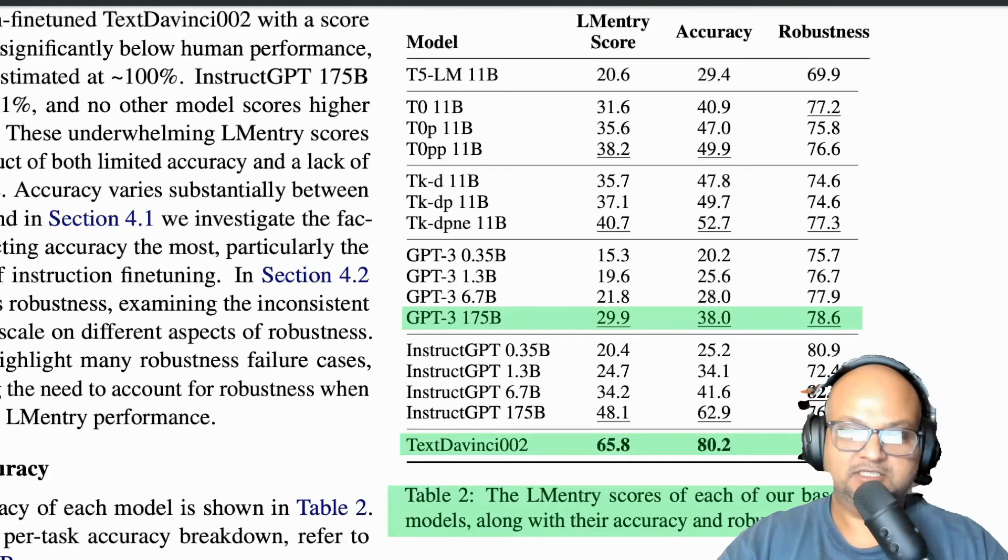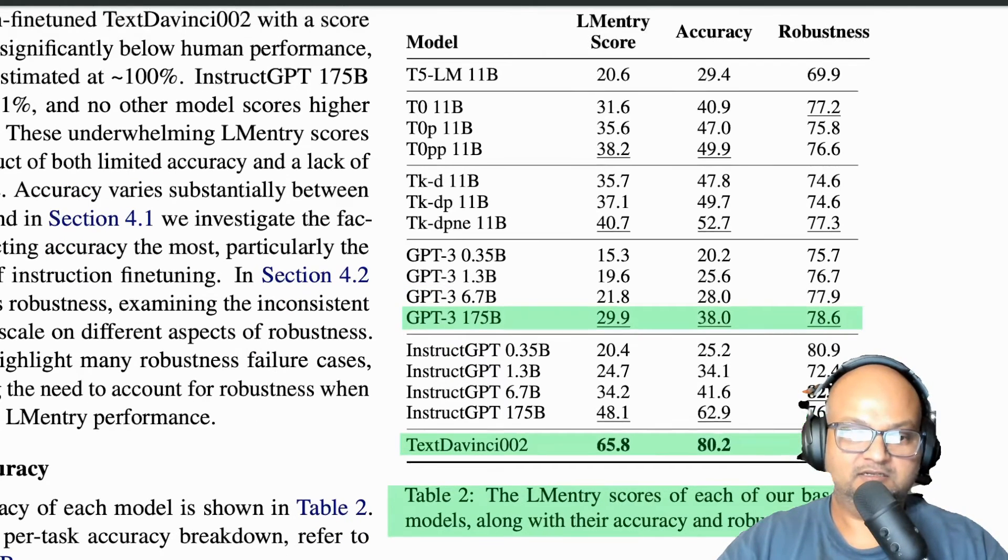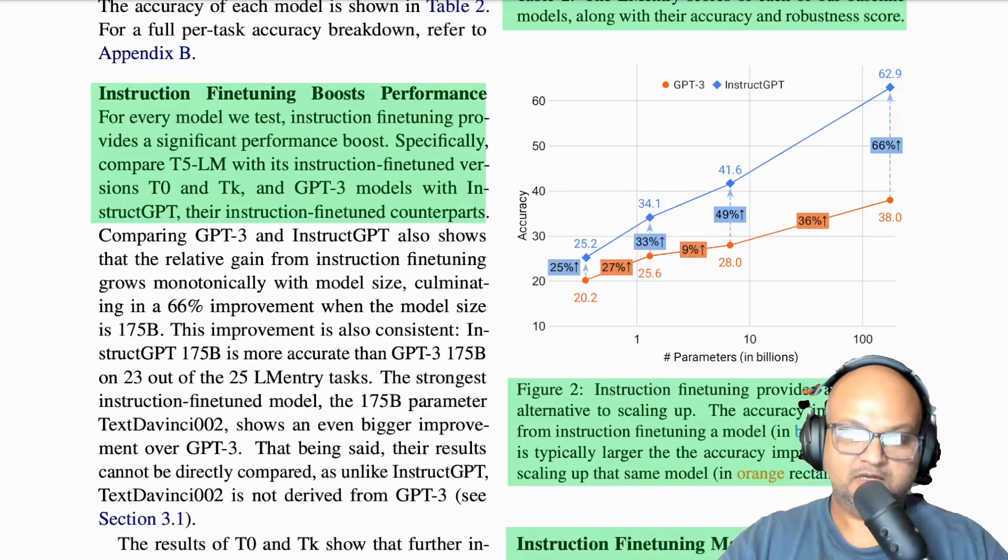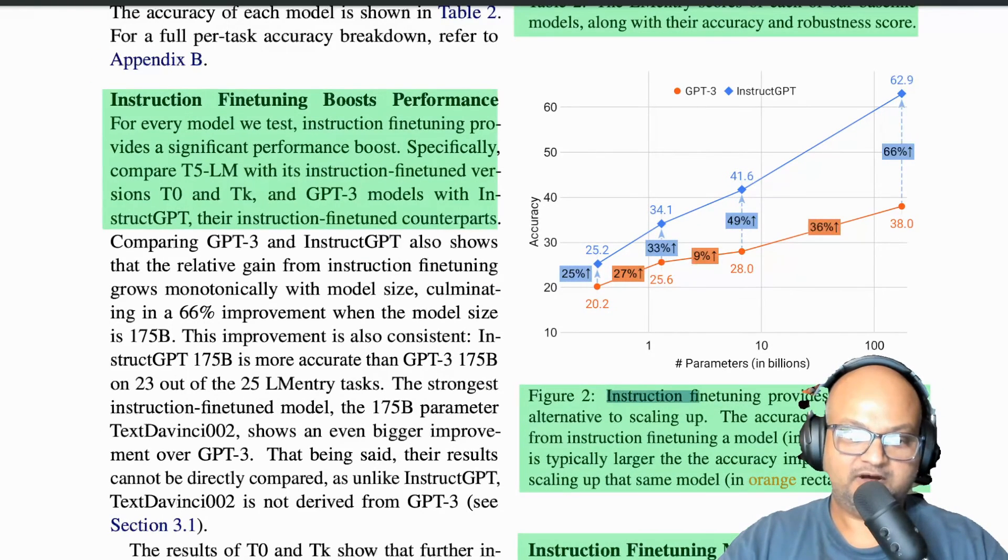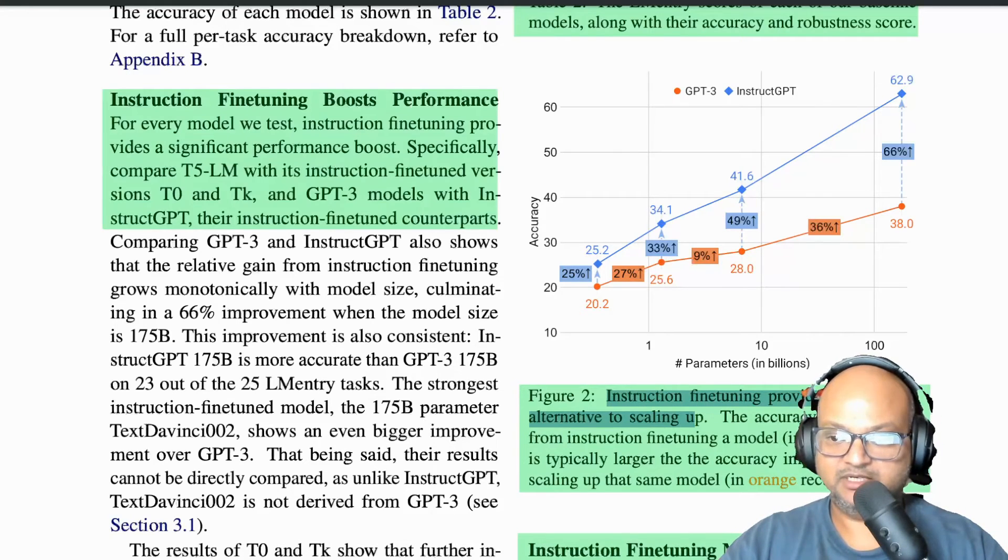And this table summarizes the scores. You can see that even the largest GPT-3 model with 175 billion parameters only scores about 30 percent, with an accuracy of 38 and robustness of about 80. The DaVinci model does much better. Now, one important result the authors found was that instruction fine-tuning gives you much more of a boost than simply scaling up the model with more parameters.